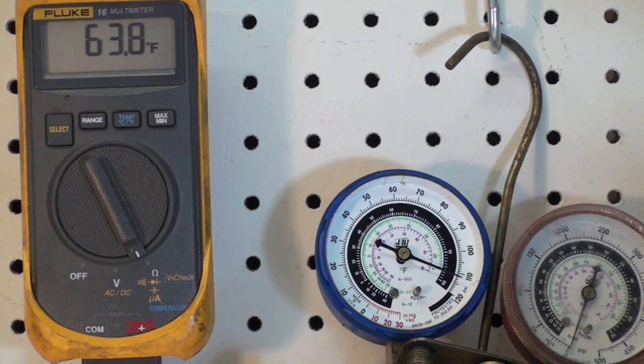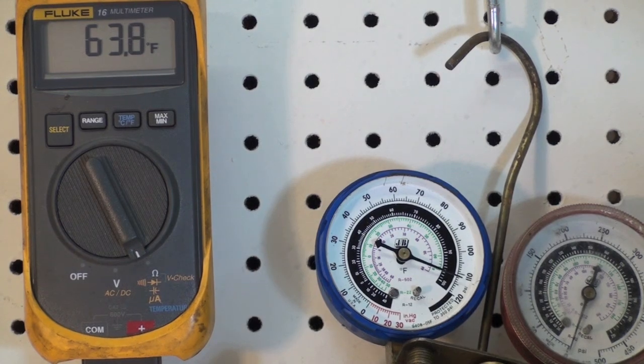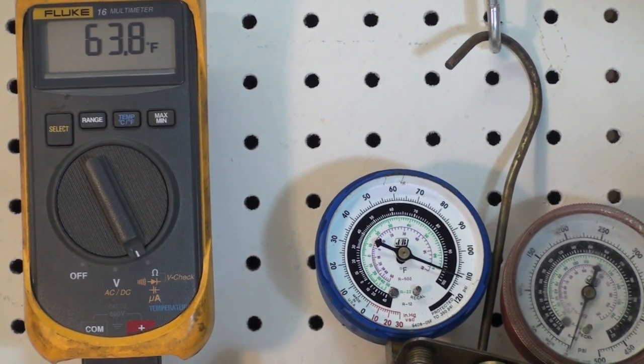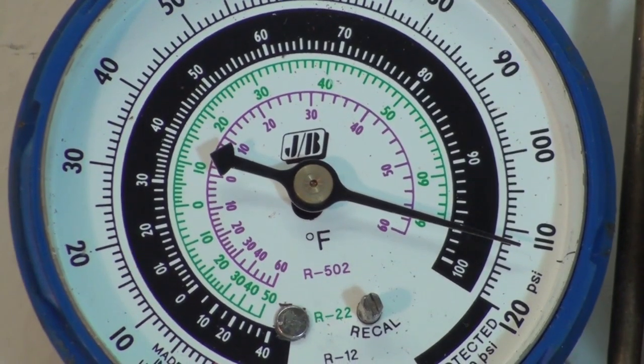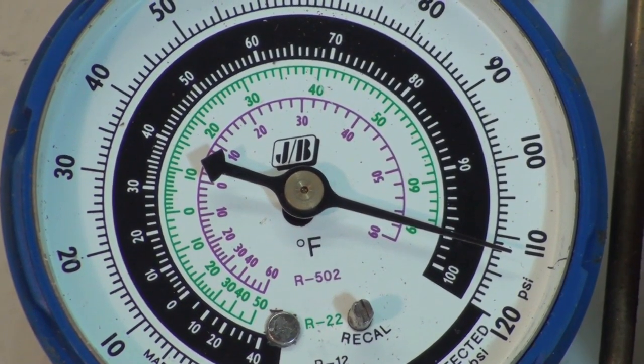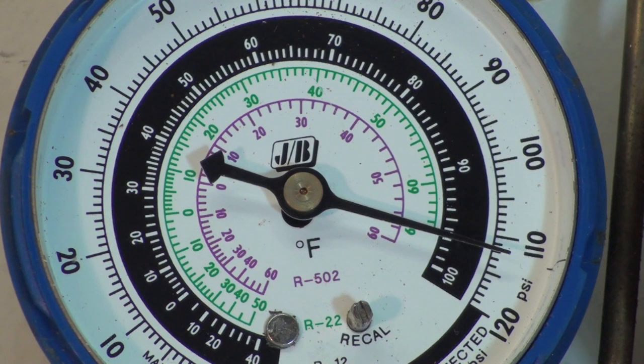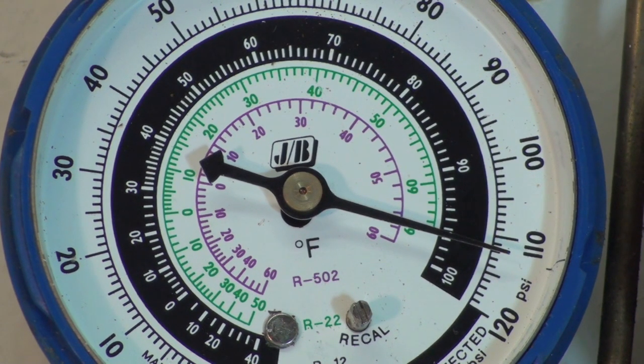You can buy dedicated electronic thermometers, some with two probes. Those are better than this because this just goes along with a multimeter. But let's see how close that 63.8 is to the actual pressure temperature. Now we're going to look at that on the gauge dials.